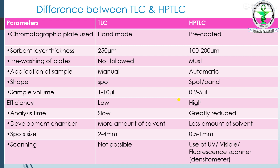Sample volume in TLC is 1 to 10 microlitres, but in HPTLC it is 0.2 to 5 microlitres. Efficiency is low in TLC but very high in HPTLC. Analysis time is slow in TLC but greatly reduced in HPTLC due to applied pressure. The development chamber requires more solvents in TLC but less in HPTLC. Spot size in TLC is 2 to 4 mm, compared to 0.5 to 1 mm in HPTLC. Scanning is not possible in TLC, but UV-visible fluorescence scanners and densitometers are used in HPTLC.